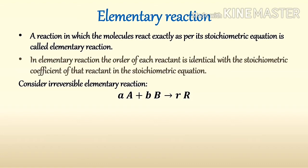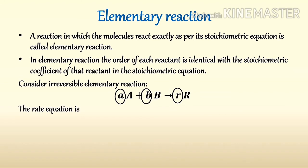In an elementary reaction, the order of each reactant is identical with the stoichiometric coefficient of that reactant in the stoichiometric equation. In this reaction, small a, small b, and small r are stoichiometric coefficients. So the rate equation can be written as: -rA = k · CA^a · CB^b.